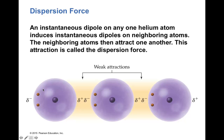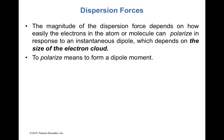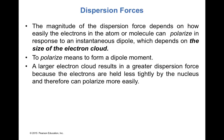The electron cloud refers to a high concentration or presence of electrons. The magnitude of the dispersion forces depends on how easily the electrons in the atom or molecule can polarize in response to an instantaneous dipole, which depends on the size of the electron cloud. To polarize means to form a dipole moment. A larger electron cloud results in a greater dispersion force because the electrons are held less tightly by the nucleus and therefore can polarize more easily.